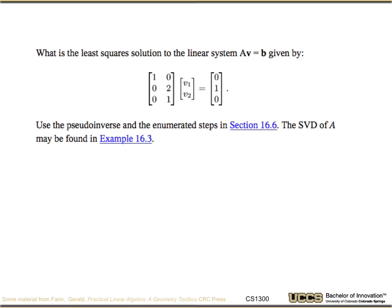Okay, now let's go use SVD to actually solve a problem. So what is the least square solution to the system Av = b, where A is given by this matrix and b is on this right-hand side? We're going to use the pseudo-inverse and the steps enumerated in section 16.6 if you get stuck. Best if you can work through it without looking back in the book. If you don't really want to compute the SVD, if you're comfortable that you can compute it, you can find the results in example 16.3 in the book. But it's better if you can just go ahead and compute them.